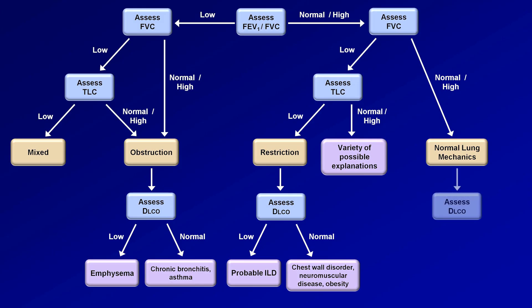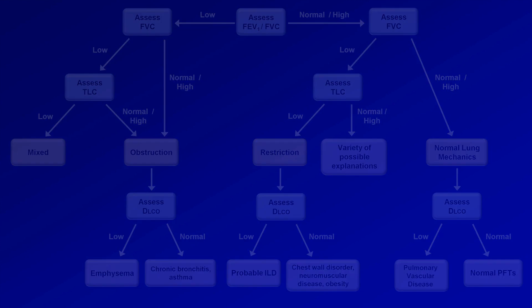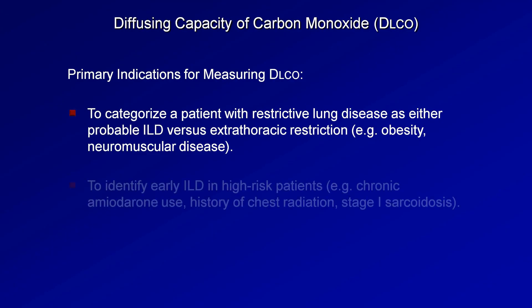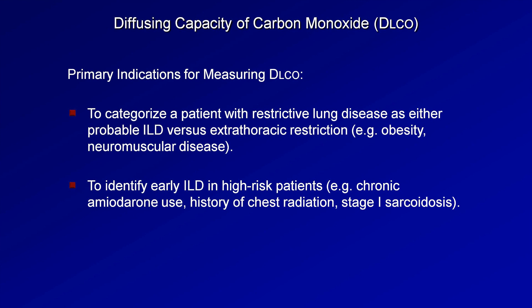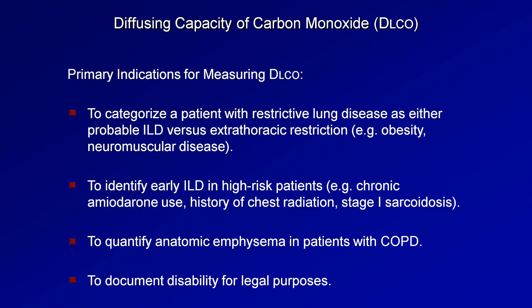Finally, among patients with normal lung mechanics, the DLCO can differentiate people with pulmonary vascular disease from people with completely normal PFTs. Testing the DLCO is not always done as part of conventional PFTs because the equipment it requires is relatively expensive. Therefore, one must be selective as to who warrants measurement of the DLCO. Primary indications include categorizing a patient with restrictive lung disease as either probable ILD versus extrathoracic restriction; identification of early ILD in high-risk patients such as those on long-term amiodarone, with a history of chest radiation, or stage 1 sarcoidosis; quantification of anatomic emphysema in patients with COPD; and to document disability for legal purposes, such as receiving state disability funds.